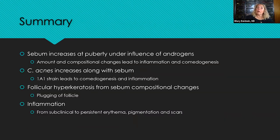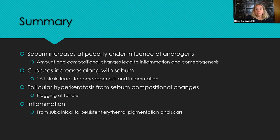In summary, we have four pathogenic factors. Sebum, increased at puberty under the influence of androgens, with both quantity and compositional changes leading to inflammation and comedogenesis. C. acnes, which increases along with sebum — sebum being its food source — and in particular the 1A1 strain, leading to comedogenesis and inflammation. Follicular hyperkeratosis, from sebum compositional changes and from C. acnes, resulting in follicular plugging. And finally, all roads leading to inflammation — from the subclinical pre-acne lesion to persistent erythema, persistent hyperpigmentation, and even to scarring. That's the story on acne pathophysiology. Thanks for listening.